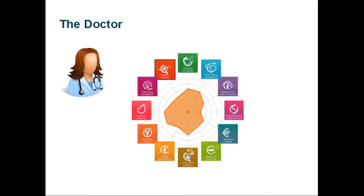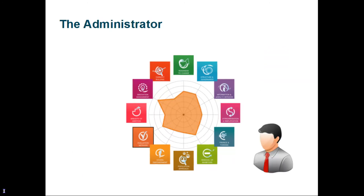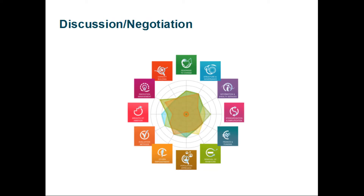The other members of the team also provide their ratings and may all have different ratings for different dimensions. In this case, this is the spider diagram obtained by the nurse, the one obtained by the IT specialist, and the one obtained by the administrator. When they come together to discuss, the tool provides support for overlaying the different spider diagrams. We can clearly see here that they haven't agreed on the same rating for all of the dimensions. In particular, for standardization and simplification, somebody has picked a higher rating.